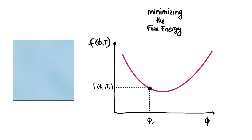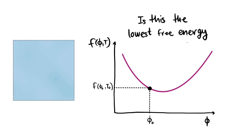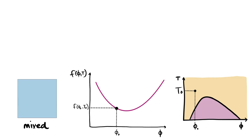Asking if the system will phase separate or not is the same as asking what is the lowest energy that our system can have. In this situation, it looks like our system should go to the minimum of the plot, but this point is not accessible to our system because the average concentration is fixed.